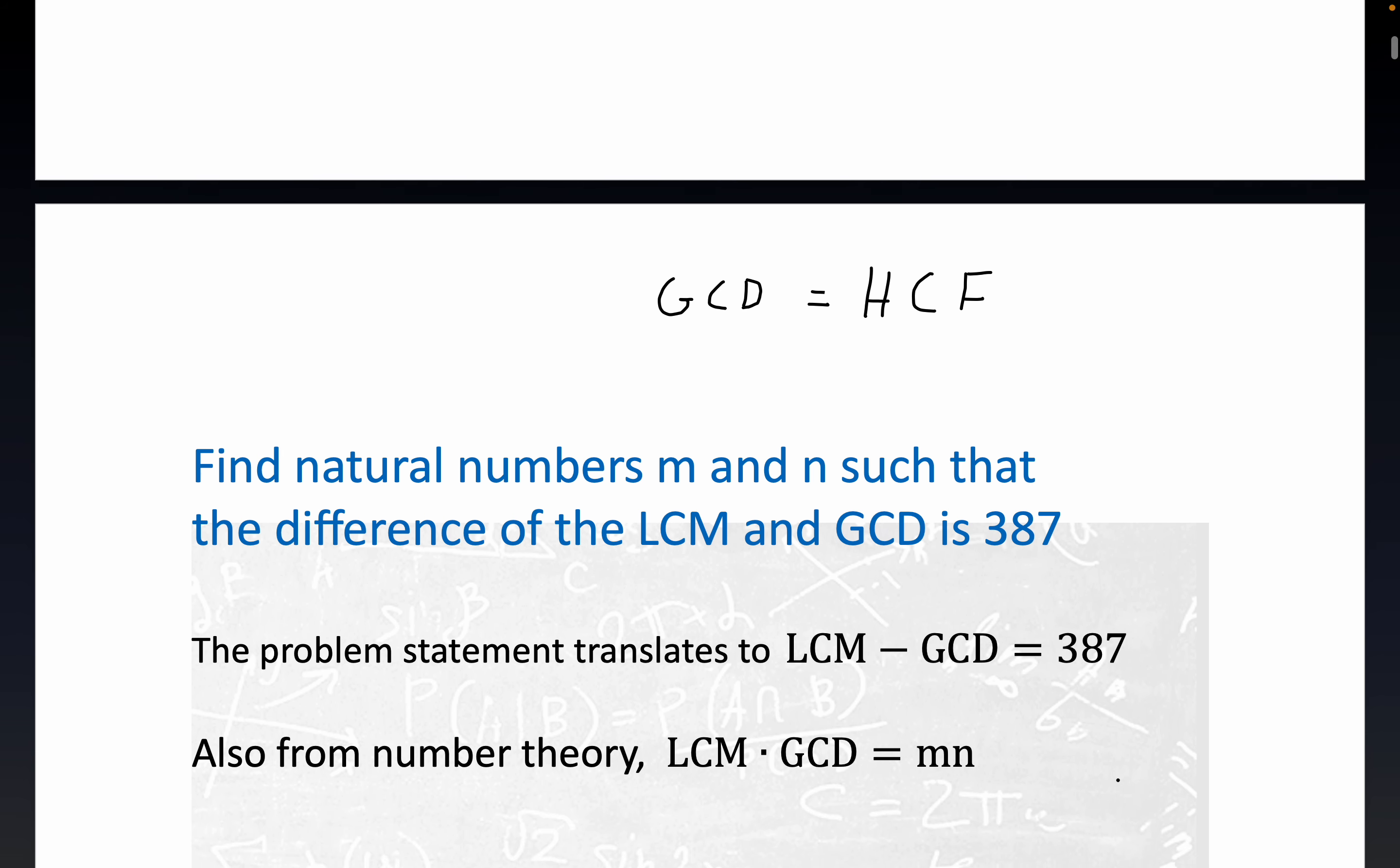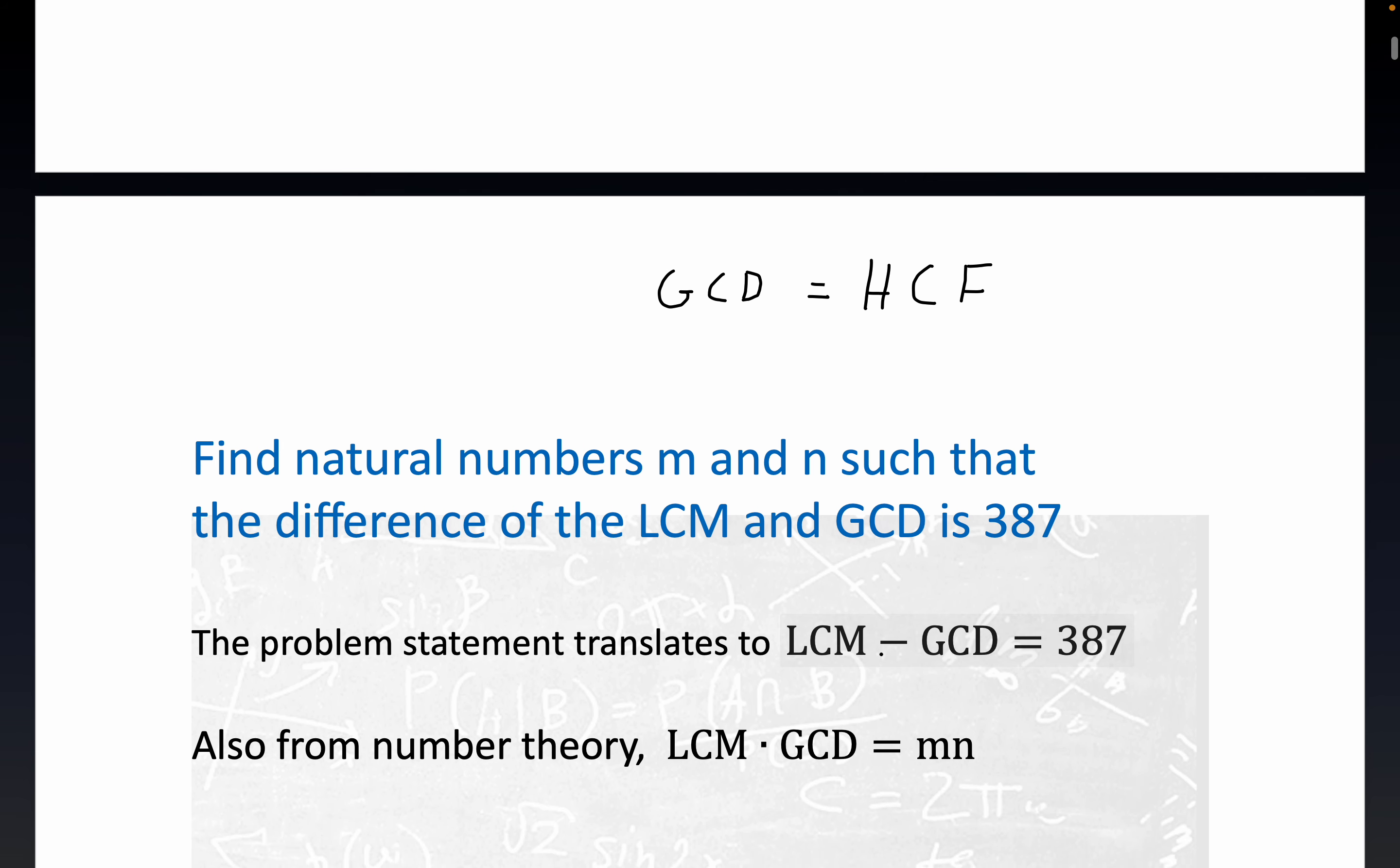We have a result from number theory that bails us out here. It's kind of hard to guess and test on this sort of problem. This result from number theory says the product of the LCM and the GCD is just equal to the product of the two integers: LCM times GCD equals mn. That's a big result.